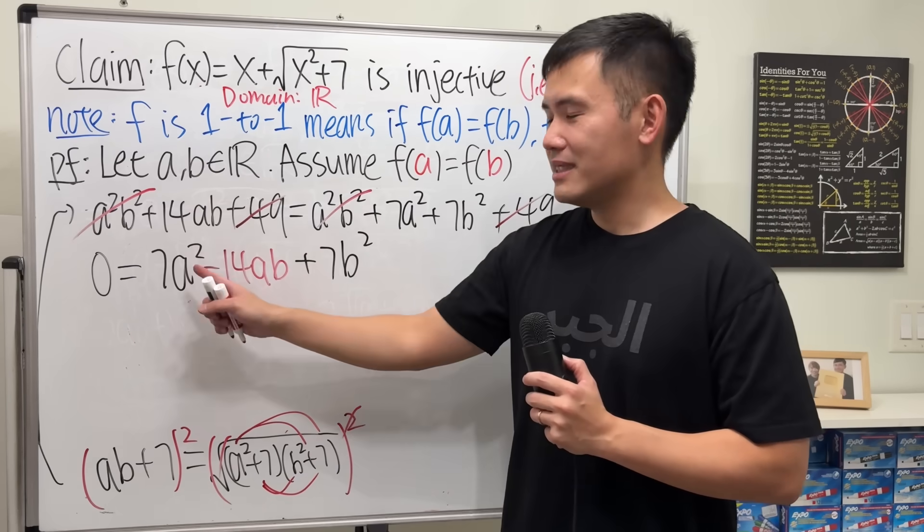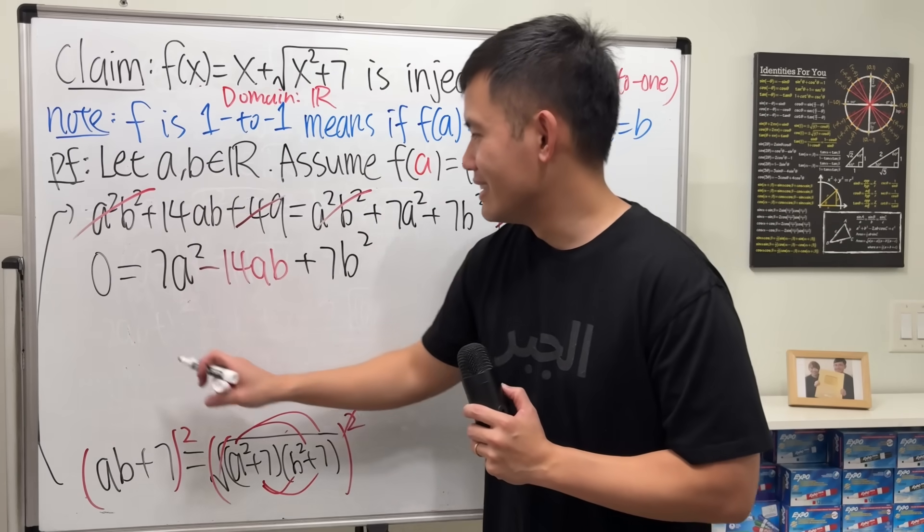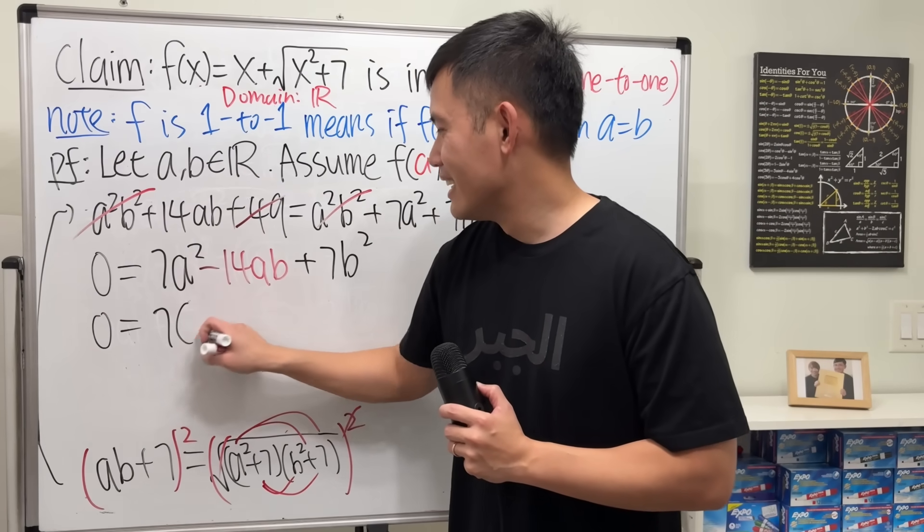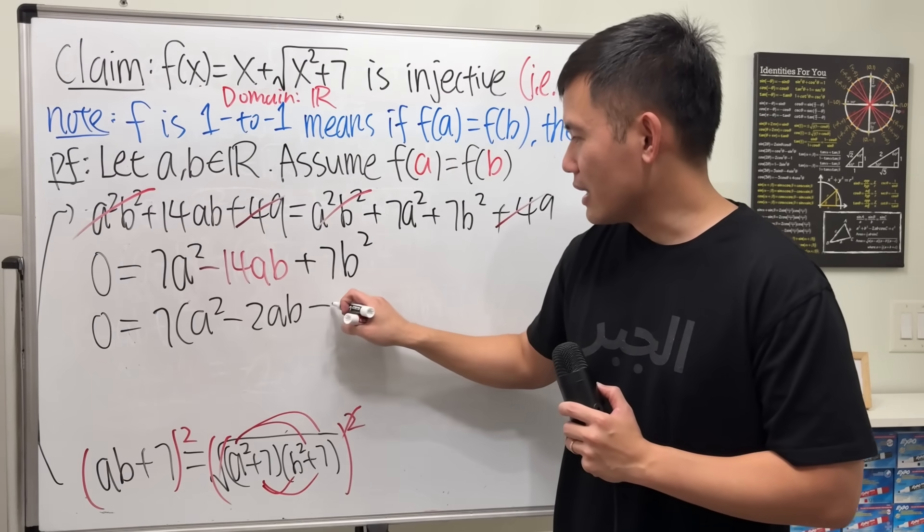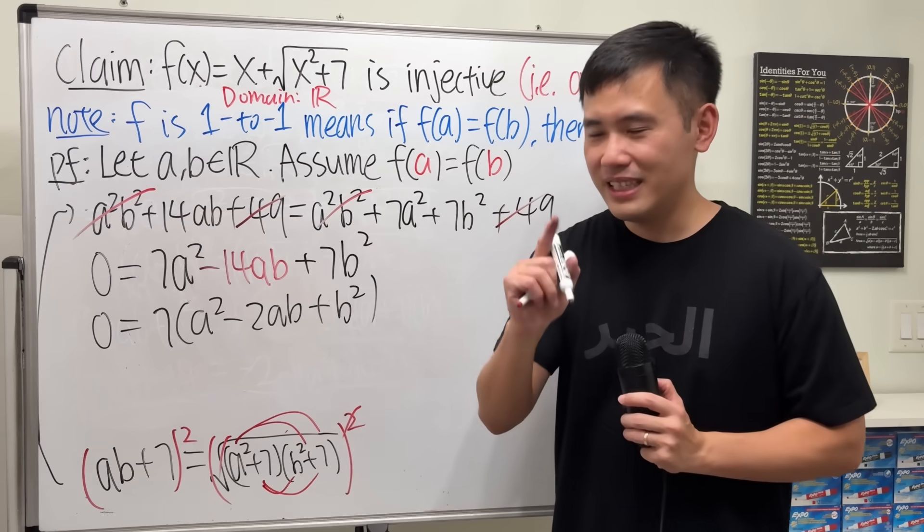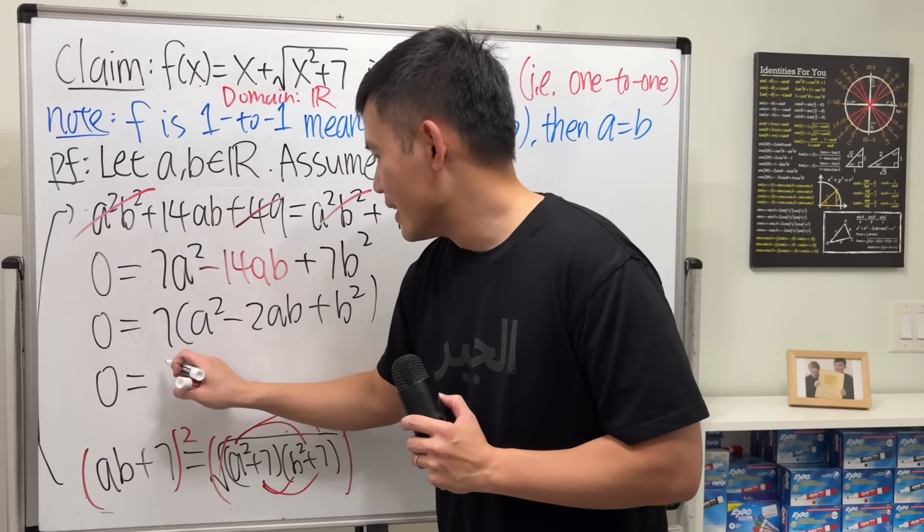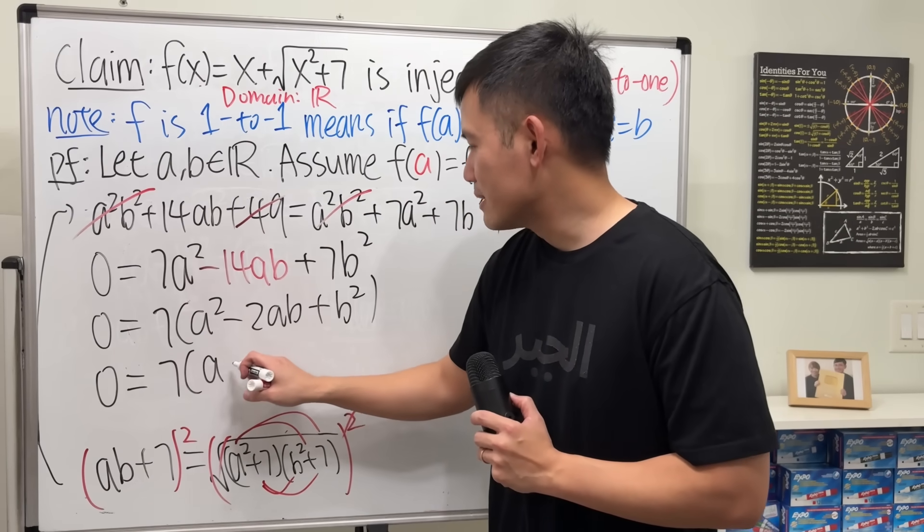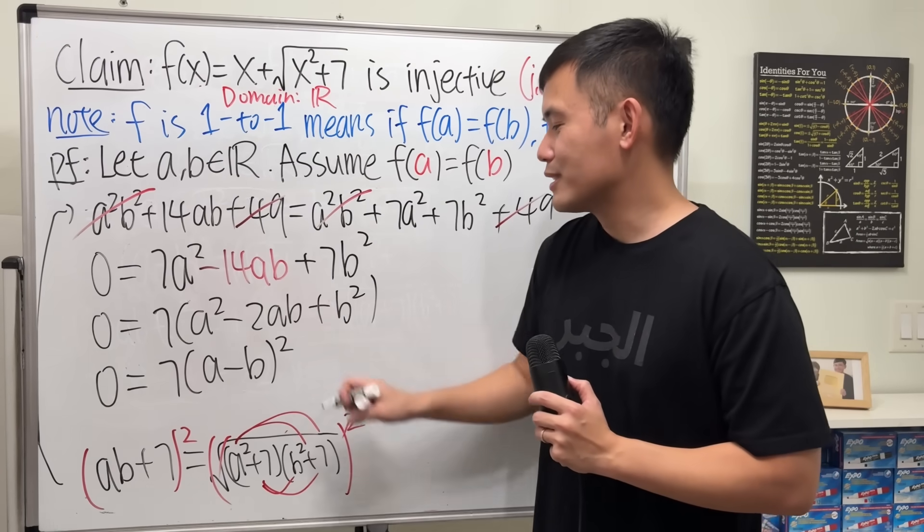Now, if you look at this, yes, we can factor out the 7. This is so nice. And then a squared minus 2ab plus b squared. Can we factor this? Yes. If we factor it, we get a minus b times a minus b. So, that's a minus b squared.